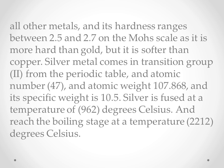Silver metal belongs to the transition group in the periodic table, with atomic number 47, atomic weight 107.868, and specific gravity of 10.5. Silver fuses at a temperature of 962 degrees Celsius and reaches the boiling stage at a temperature of 2212 degrees Celsius.